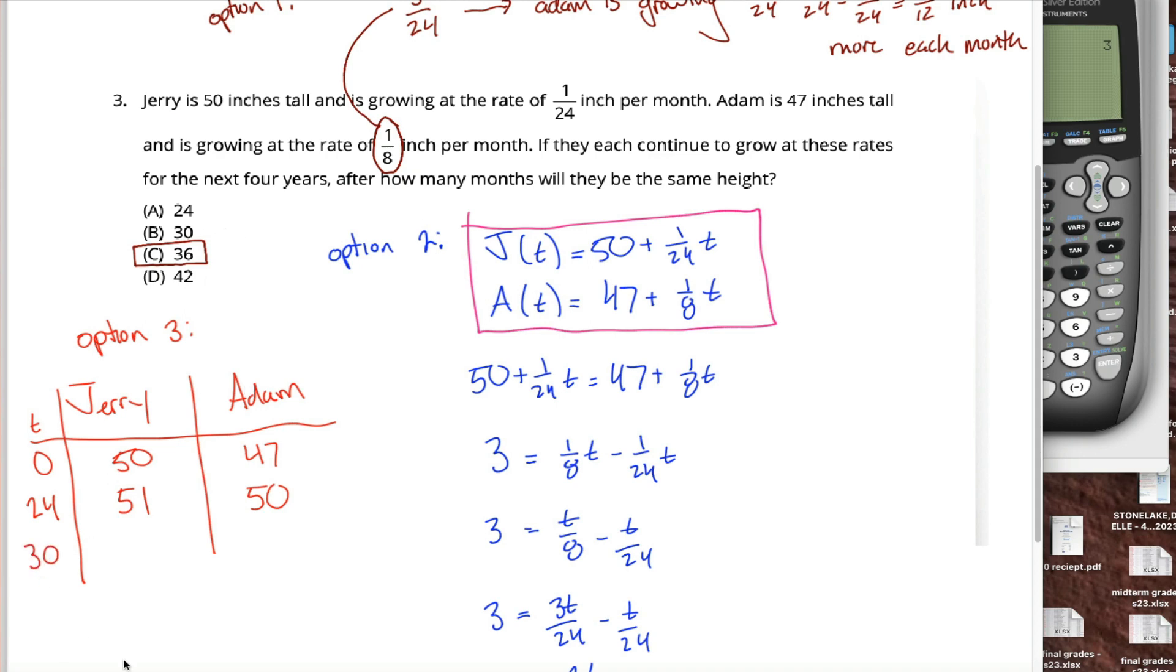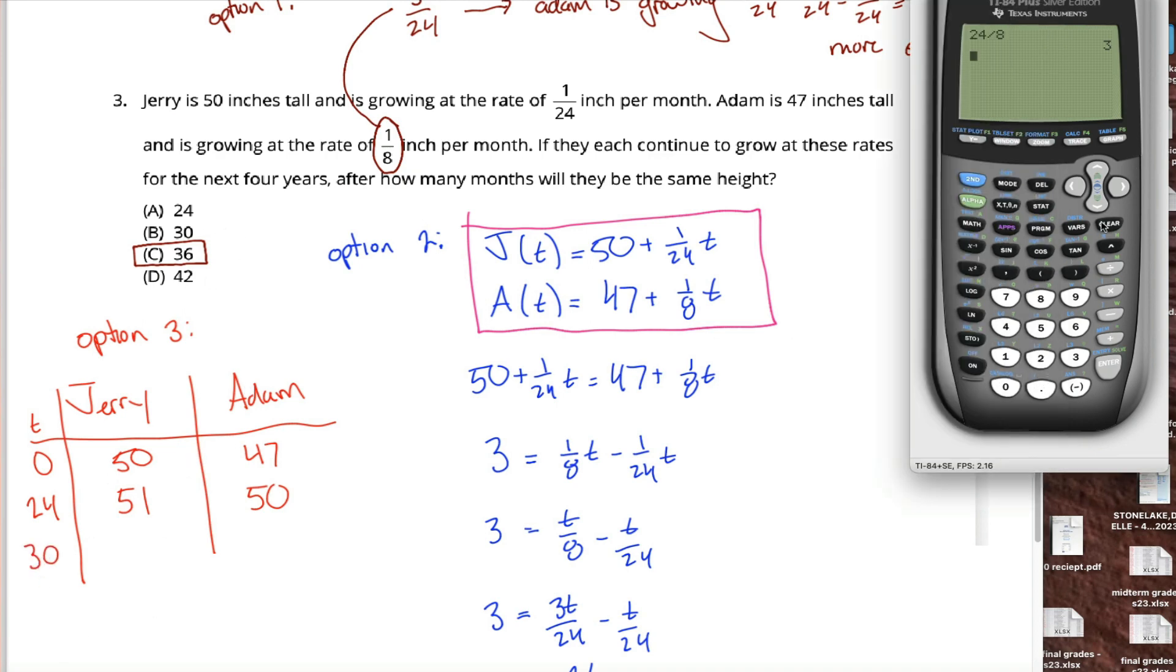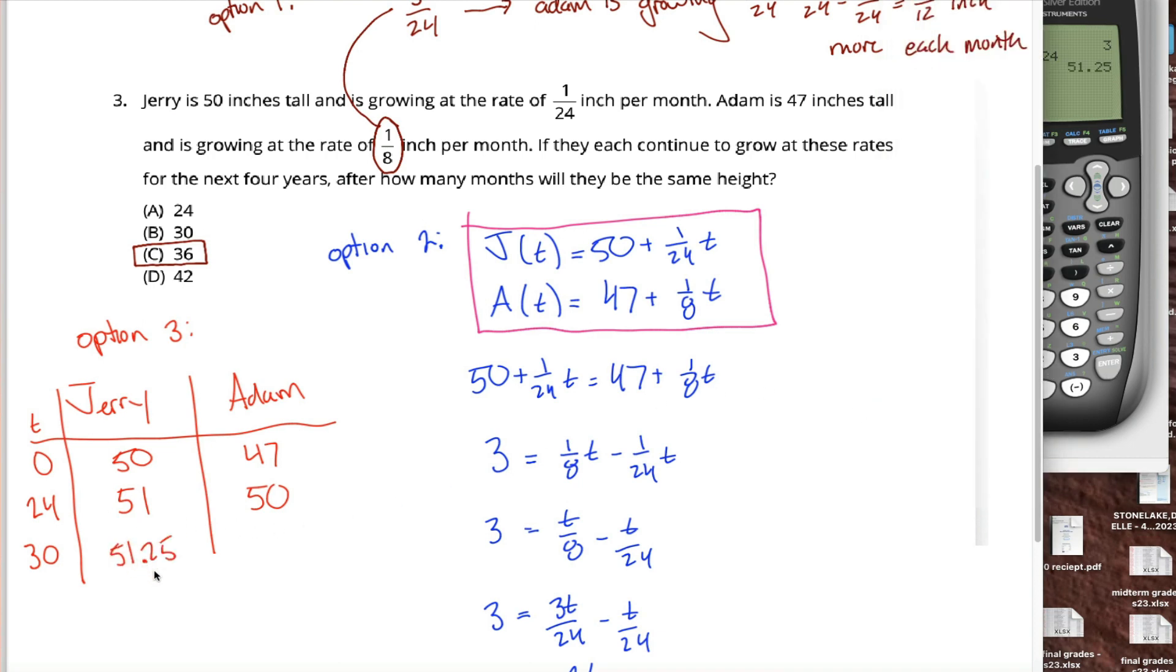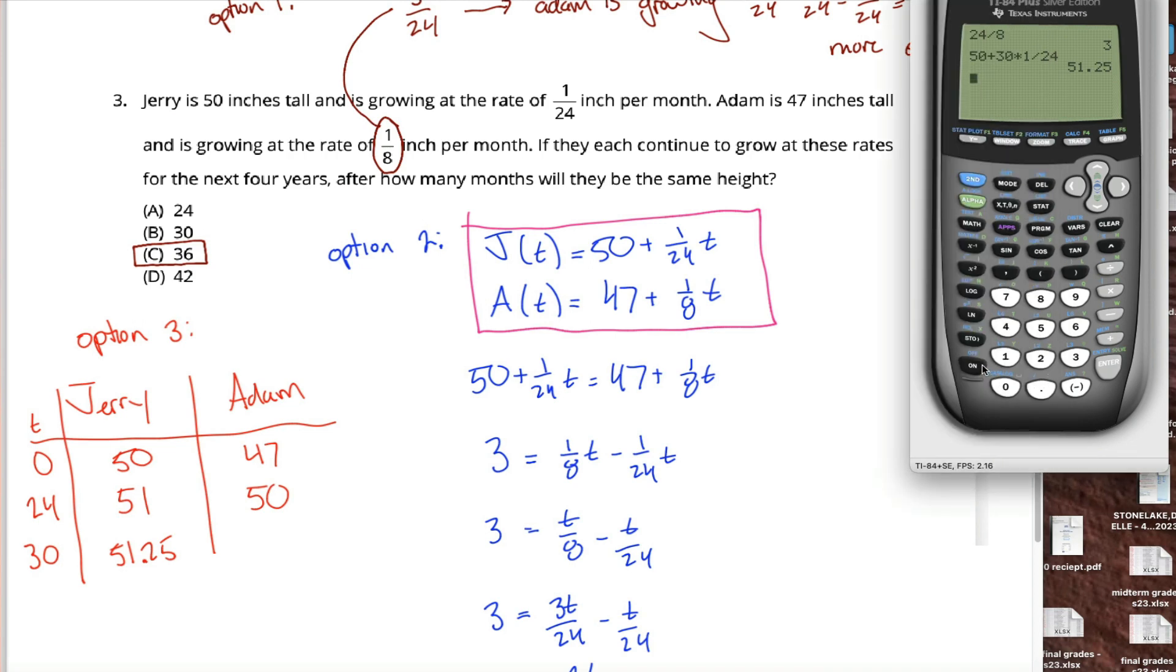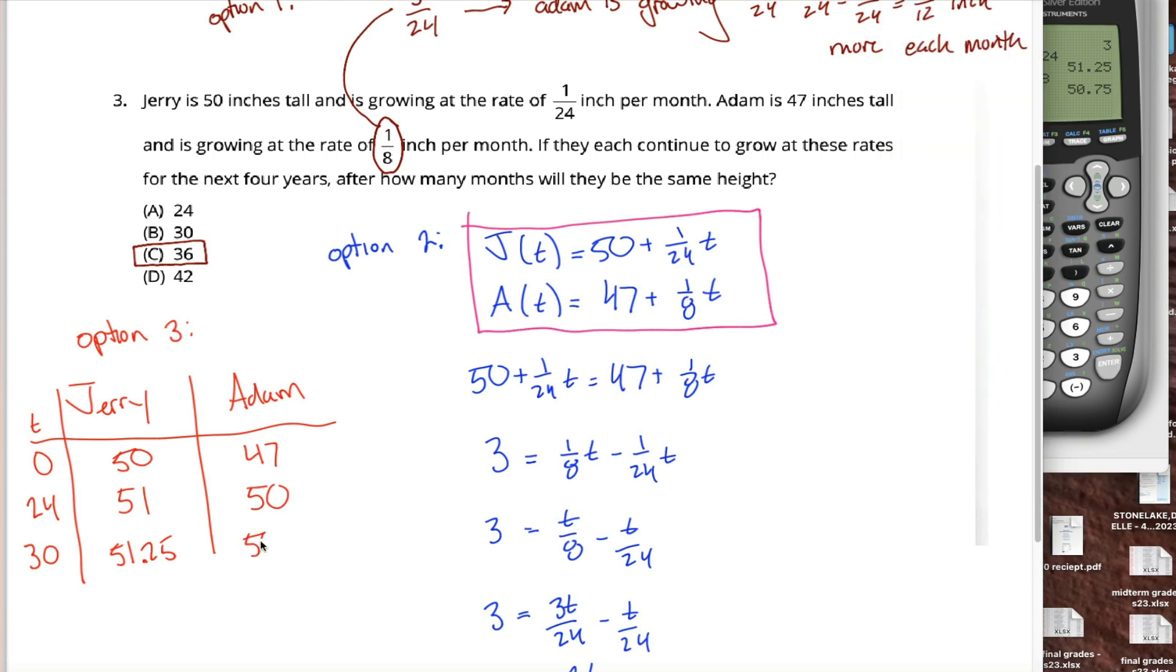Maybe at time 30 things will work out. How tall will Jerry be? Well, he's the original 50 inches plus 30 of these. When you hear of in a word problem, it typically means times 24ths, one divided by 24. Jerry's 51.25 inches tall. Is Adam 51.25 inches tall? I sure hope so because then that's my answer. Well, let's see. Adam is 47 plus 30 of these multiply 1/8th inches because he's growing at an eighth of an inch per month. Adam is 50.75 inches tall. Bummer. They're not the same height. 30 is not the right answer.